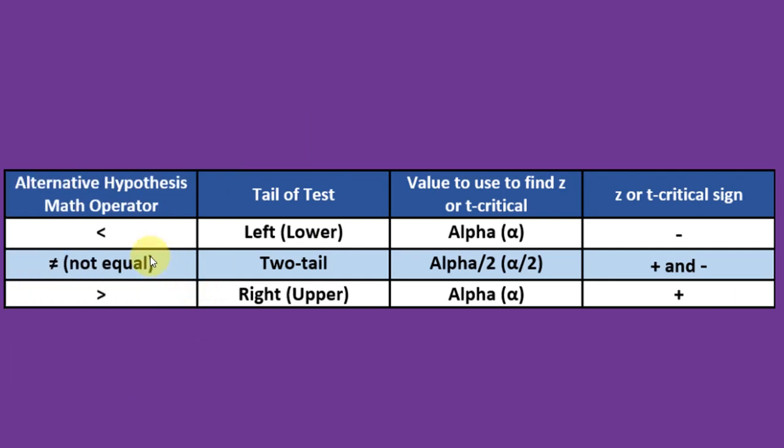Once you have your hypotheses stated in math terms, you look at the alternative hypothesis math operator. If it's a less than symbol, that's pointing to the left. That means that it's a left tail test, and to find your critical values of z or t, you put all of alpha in that left tail.